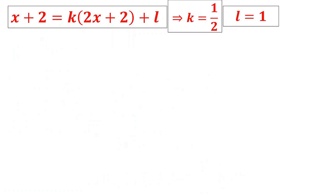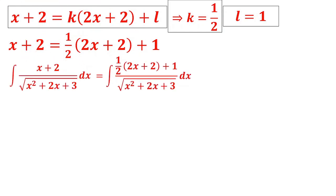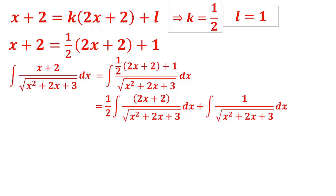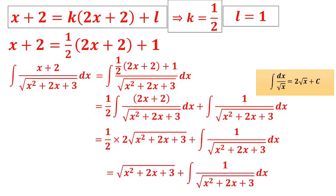So x + 2 = (1/2)(2x + 2) + 1. Check: (1/2)(2x) = x ✓, (1/2)(2) + 1 = 2 ✓. Putting into the integral and splitting: ∫(1/2)(2x + 2)/√(x² + 2x + 3) dx + ∫1/√(x² + 2x + 3) dx. The first integral evaluates directly to (1/2) · 2√(x² + 2x + 3) = √(x² + 2x + 3). The second integral requires completing the square.